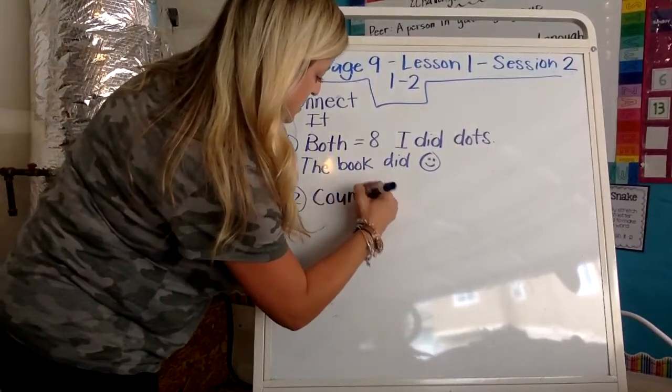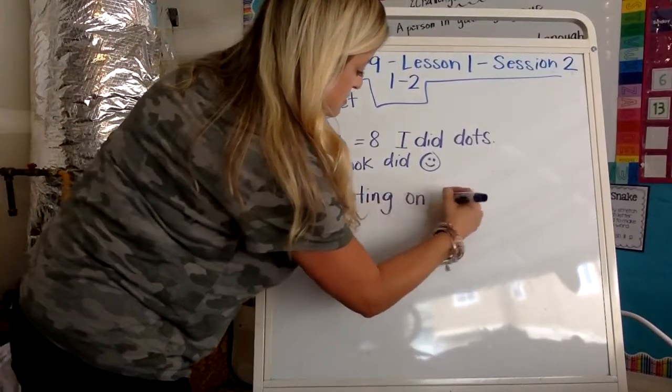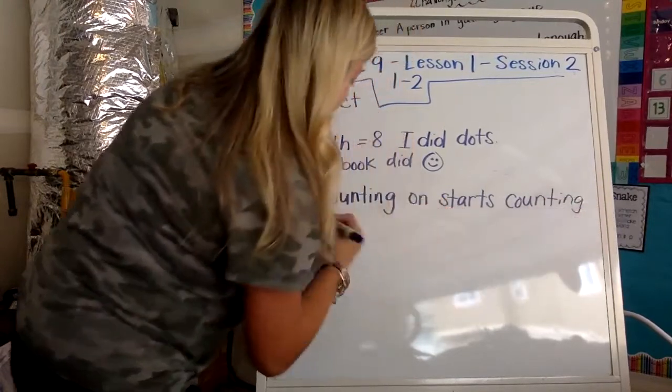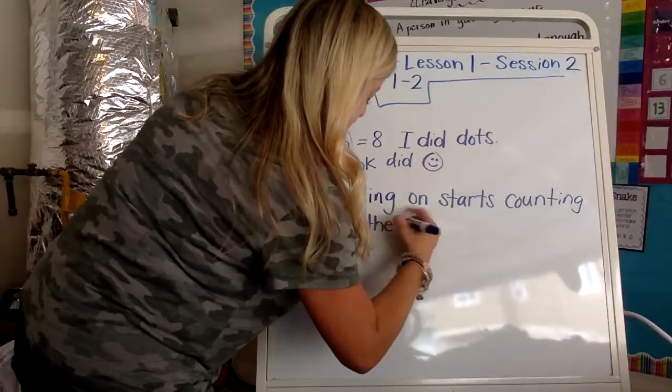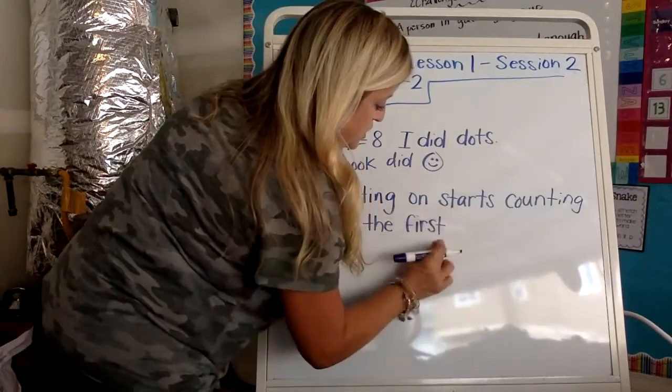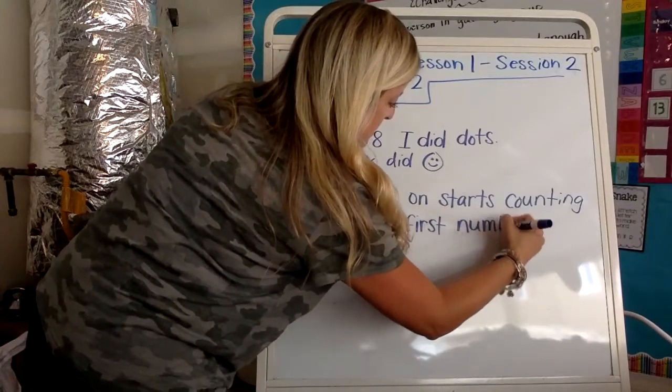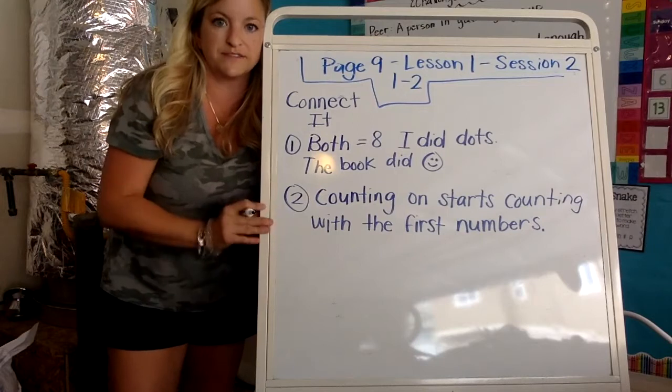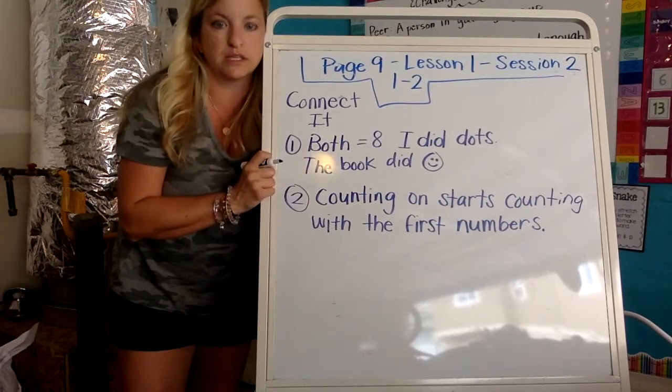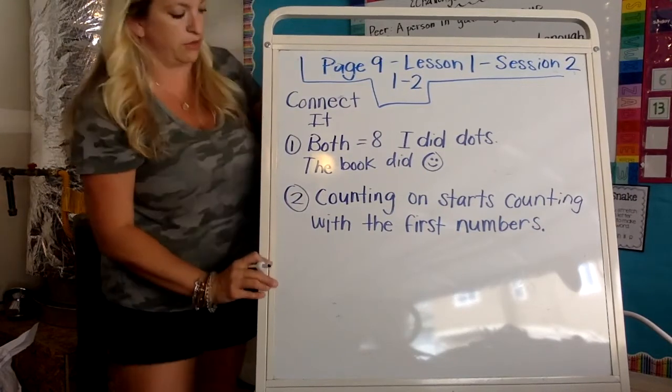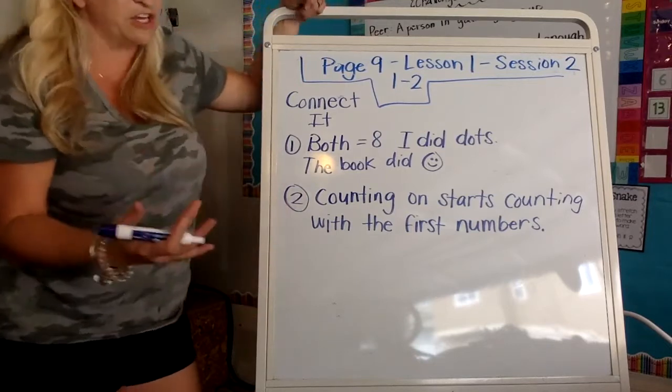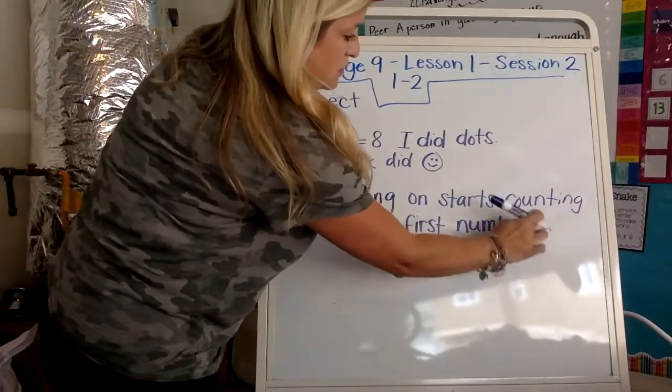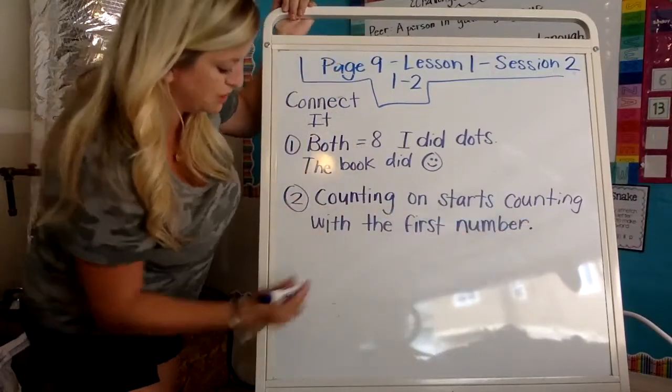So I'm going to write counting on starts. Counting on starts with the first number. So if you can write all of this down, it's going to help you. Five-star writing. I have a capital to start my sentences. Always, always, always. That goes in any type of writing that I do, whether it's in math or writing. So the difference between counting on and counting all of them is that counting on starts counting with the first number. Period. I'm going to take away that S. It's number, not numbers. With the first number.